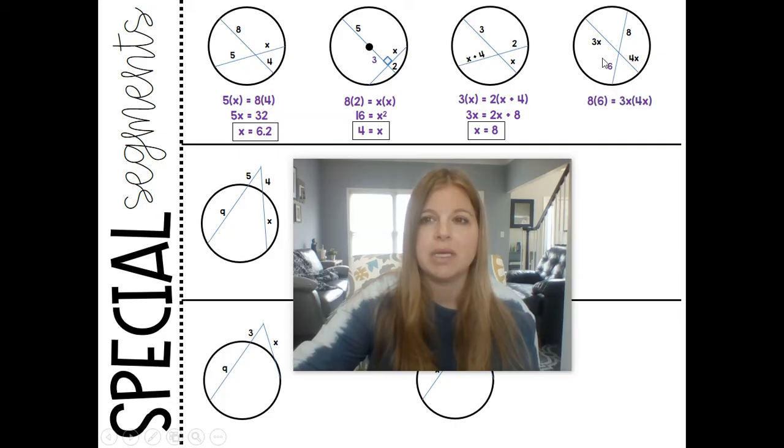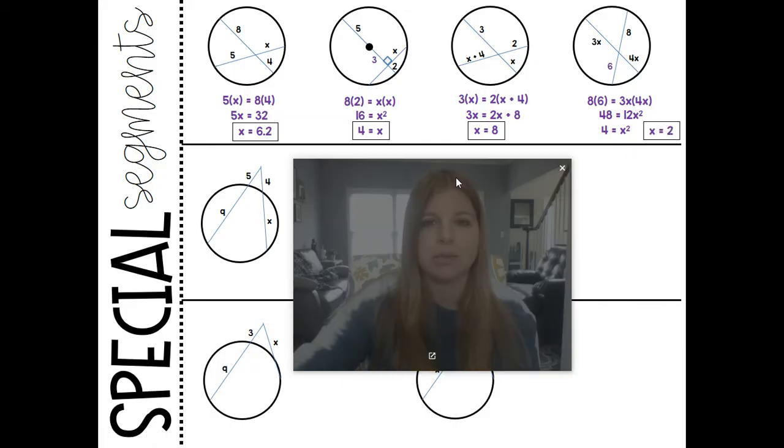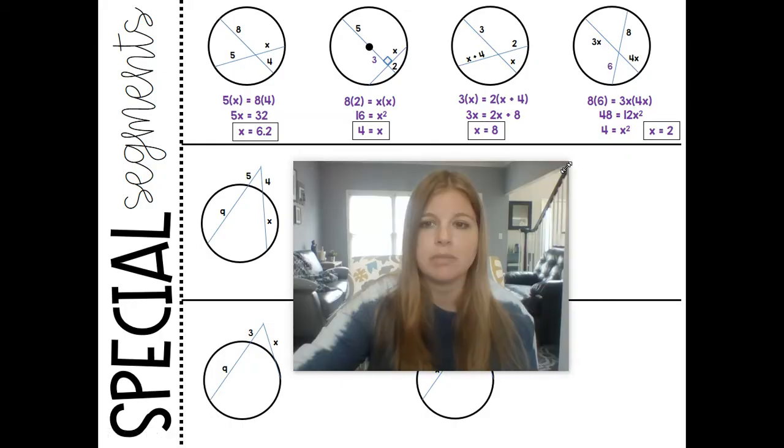Last one, same idea. 8 times 6 is equal to 3X times 4X. Now in this case, we get 48 equals 12X squared. We divide both sides by 12, and then take the square root, and X is equal to 2. Pretty good.